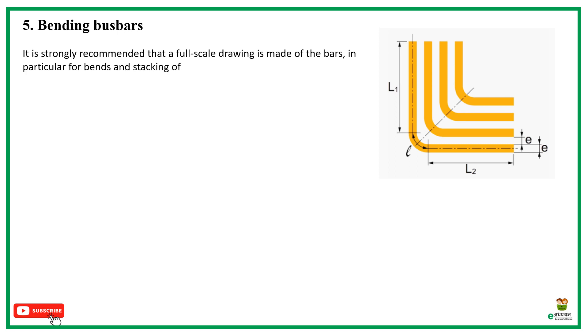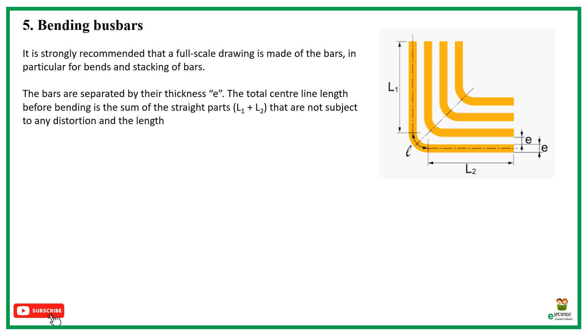The bars are separated by their thickness. The total center line length before bending is the sum of the straight parts L1 plus L2 that are not subject to any distortion and the length of the curved elements on the neutral line, in theory at the center of the thickness of the metal. For bending 90 degrees, minimum bending radius should be equal to its thickness.